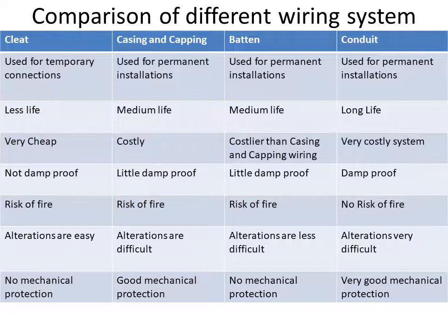A comparison of different types of wiring — cleat, casing and capping, batten, and conduit. Cleat wiring is a temporary wiring system; all other three are for permanent installations. The life of cleat wiring is very short, medium for casing and capping and batten, and good for conduit wiring.